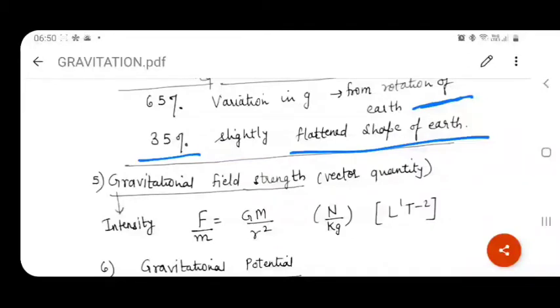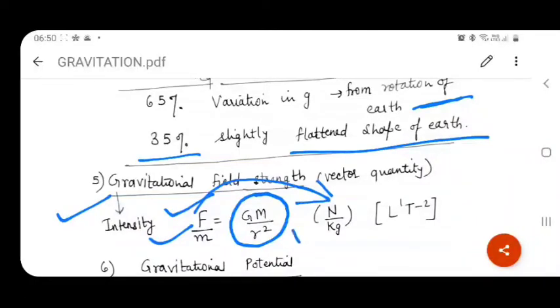Next point, gravitational field strength which also indicates gravitational intensity. This is the force experienced by an object per unit mass of that object. It is capital G, capital M upon R square. By this, the unit is Newton per kg and it is dimension of acceleration.